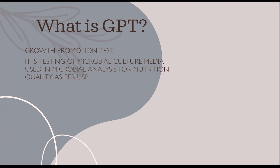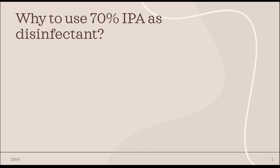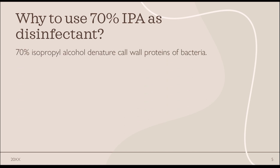Basically, GPT is the testing of microbial culture media in both solid or liquid form to identify the nutritional quality. The next question is: why do we use 70% IPA as a disinfectant — nothing but isopropyl alcohol? The answer is that 70% isopropyl alcohol is used as a disinfectant because it has the ability to denature cell wall proteins of bacteria.